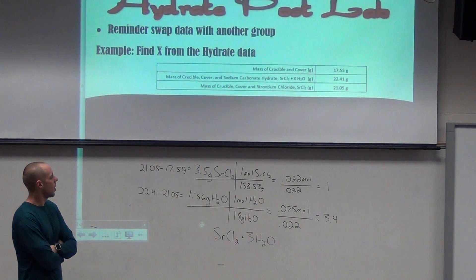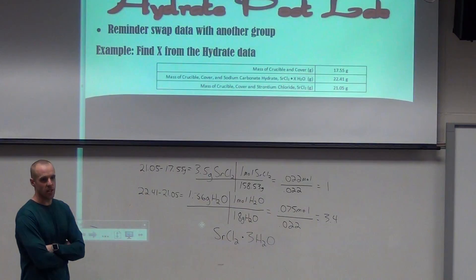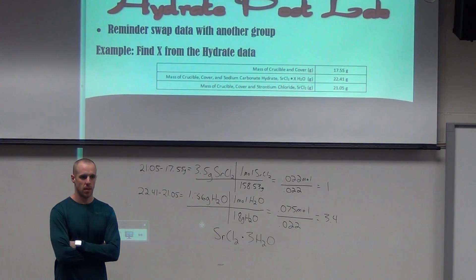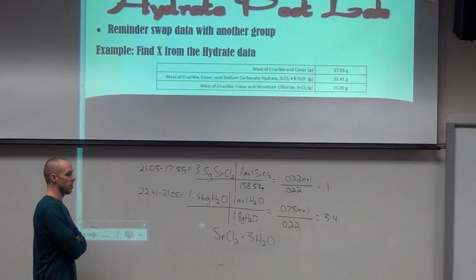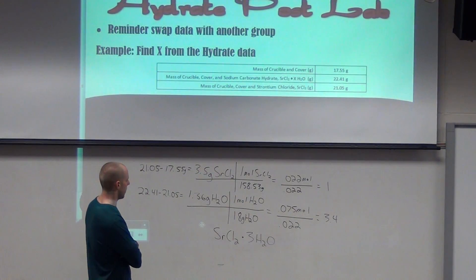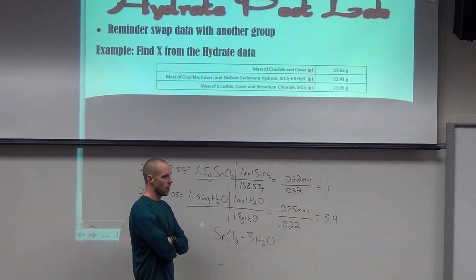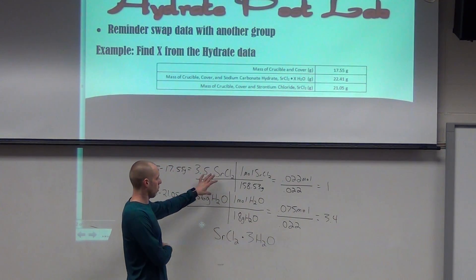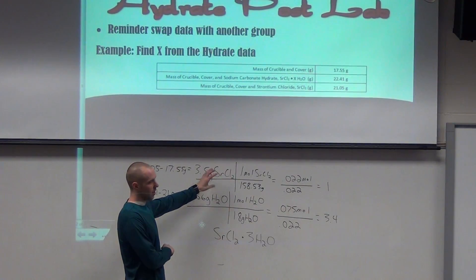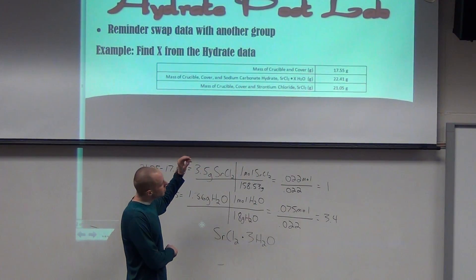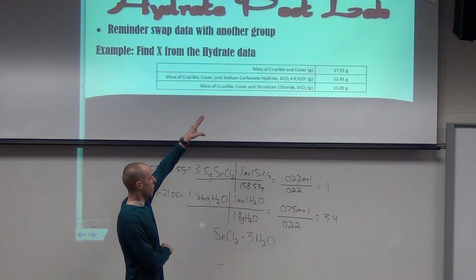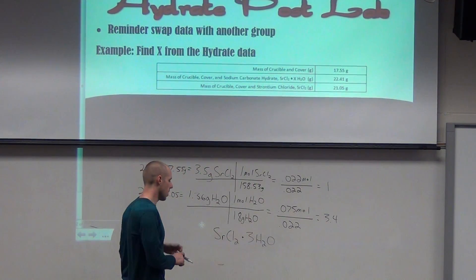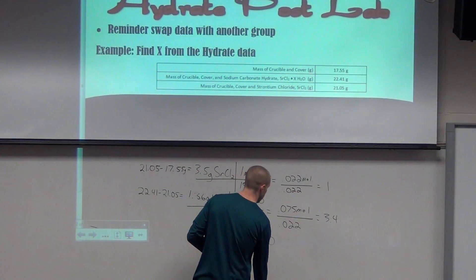Does anybody have questions on this one — on how to use the data? The most important part when you get a problem like this is finding out how many grams of the two things you're working with first are from the data. Then most of us can probably solve it from there. Working through the data is probably the most challenging part, so we want to isolate the pieces we're asked for.